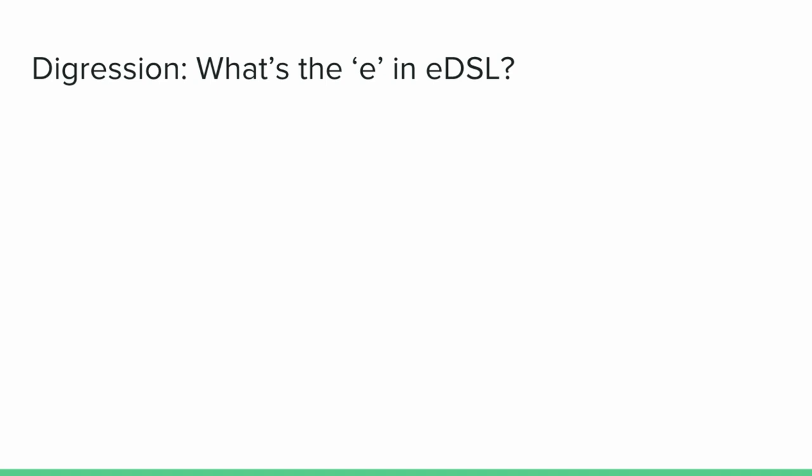A short digression: if you've read my abstract, I talk a lot about EDSLs — what's the E in EDSL? Normal DSLs include things like GLSL (the GL shading language), SQL, and shell scripts — these are languages in their own right. Embedded DSLs are embedded into another language. We build up a tree of expressions and then compile it into Scala, Haskell, or any language that acts as the host of our DSL. So it's expressed inside of the host language. Those are embedded DSLs.